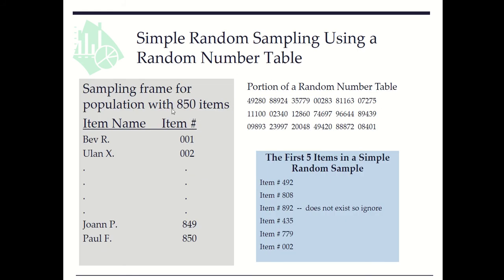Here we have a sampling frame containing 850 items labeled as 1 through 850. Here we have a random number table like this. Because we have item numbers 1 through 850, we can use three digits to form a random number.